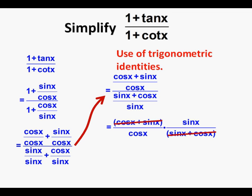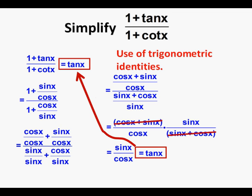Next, quantity cosine x plus sine x divided by quantity sine x plus cosine x cancel to equal 1. Bringing down what's left, we have sine x over cosine x. Going back to the tangent identity we used earlier, we know that sine x over cosine x equals tangent x, which we box in below as our answer and place beside our original expression, 1 plus tangent x over 1 plus cotangent x.